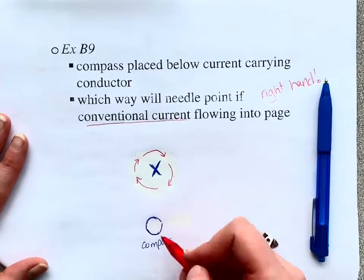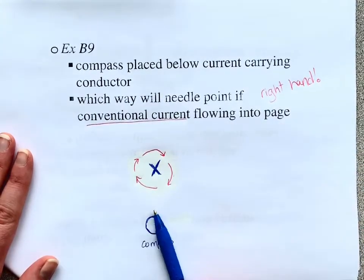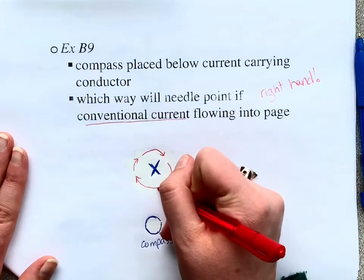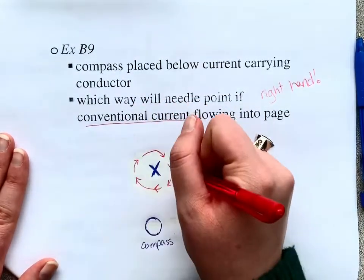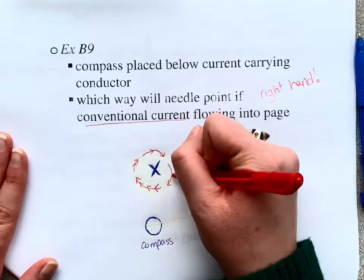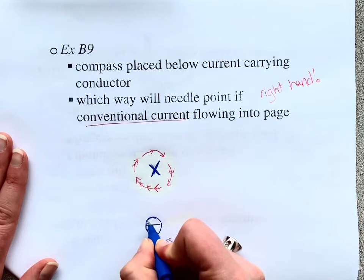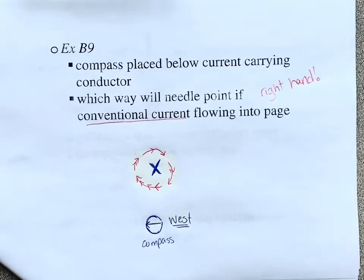If we place the compass below the wire, the needle is going to align with the magnetic field at that position. Right below the wire, the clockwise field is going to the left — that is, to the west. So the compass needle is going to point west.